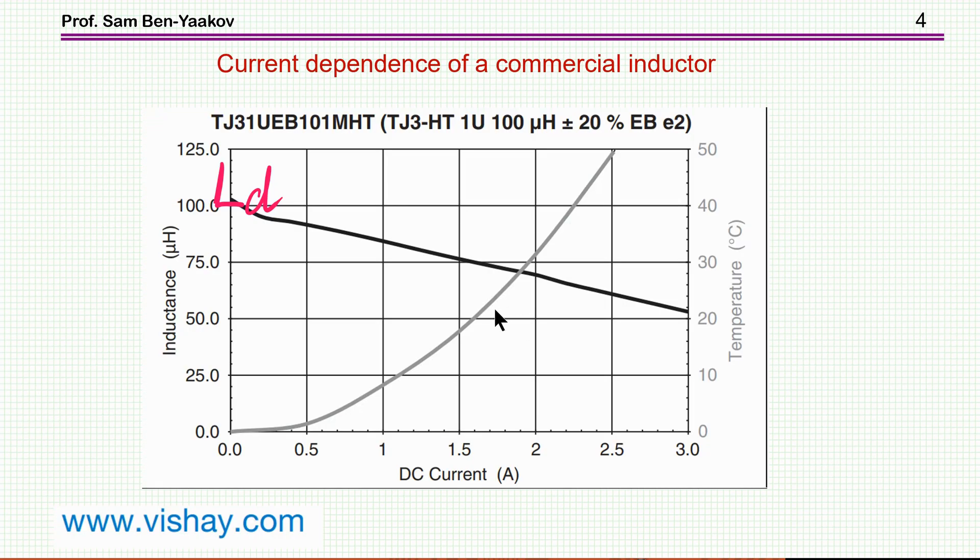On the other hand, commercial inductors are also current dependent and the information about the inductance is given normally this way. This is the derivative or local inductance as a function of the bias DC current.